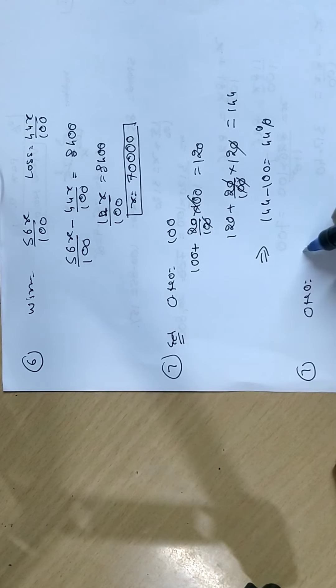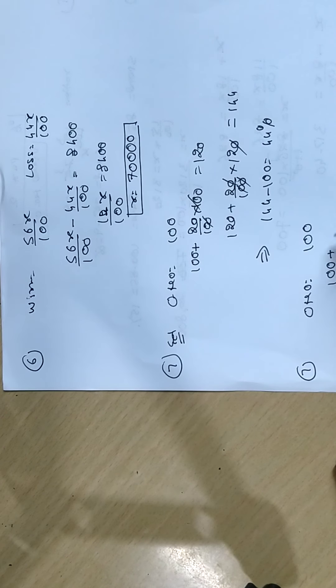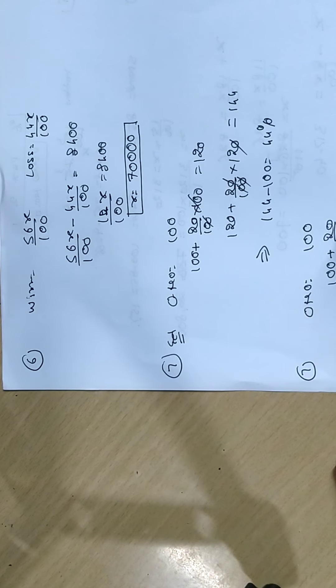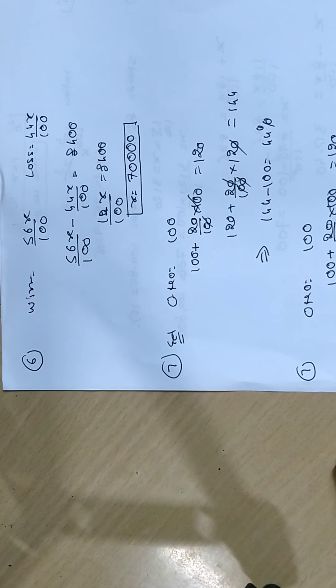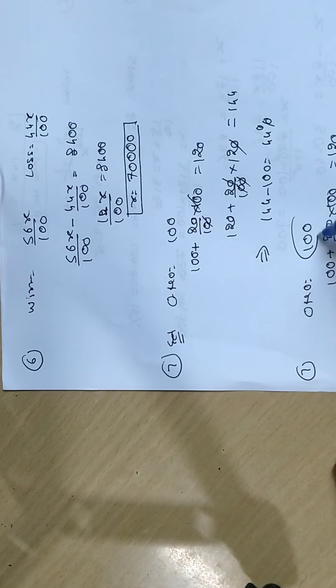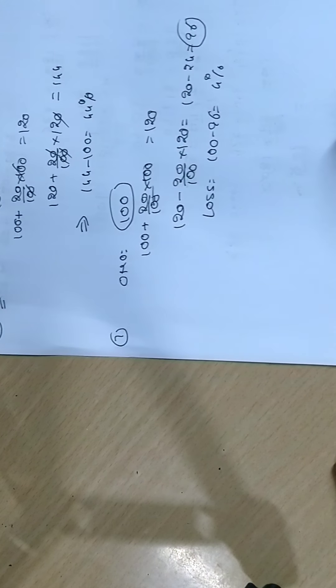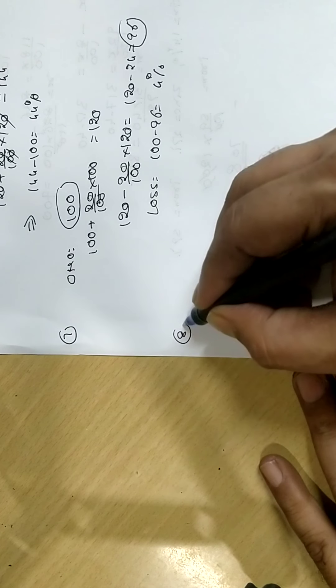The original number is 100. First increase by 20%, that is 120. Now, 120 decreased by 20%, that is 120 minus 24, that is 96. Original was 100, at the end 96. There's a loss of 100 minus 96, that is 4%.